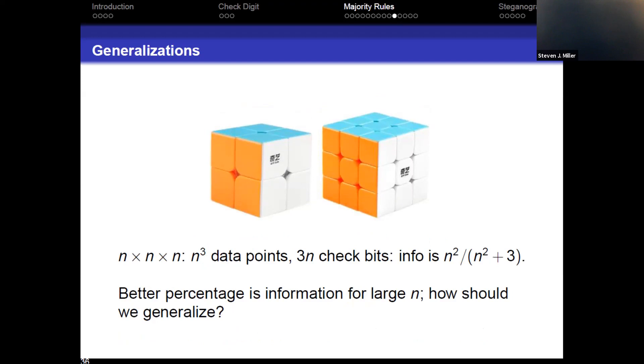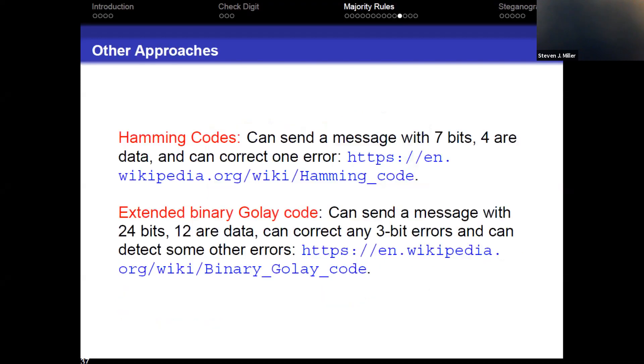In general, what will it be in the limit? Well, if I have an N by N by N cube, I have N cubed data points. And you have to look at how many check digits do I have? I have N planes in each of the three directions. So I have 3N check digits. So when you do the algebra, you get the info is N squared divided by N squared plus 3. So this is much better than what we were getting with the triangles and the squares. We were like N over N plus 2. So things are going much faster now with N. And then the question is, how can you continue to generalize this? So as has been remarked, there are better ways than this. So this is not how things are done.